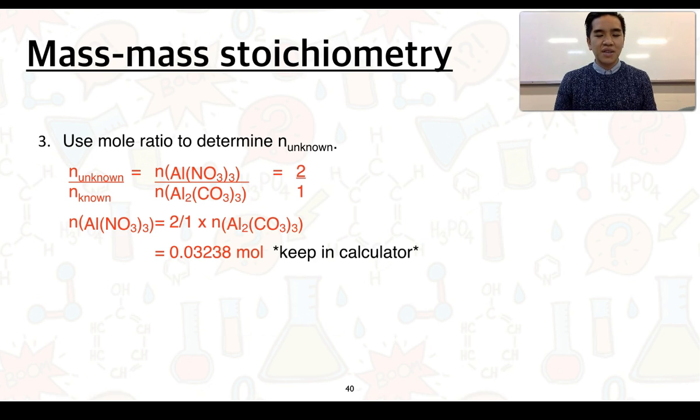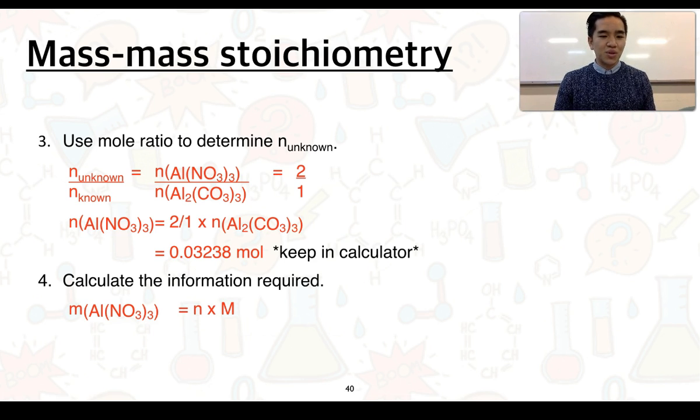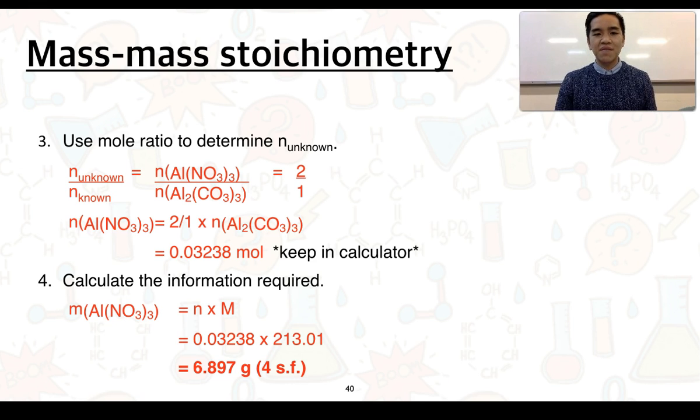And then finally calculate the information required. The question asks for the mass of the aluminium nitrate. So, we're going to use mass is equal to number of moles times molar mass. Substitute your number of moles, multiply it by the molar mass of 213.01. And we should get an answer of 6.897 grams written to four significant figures.